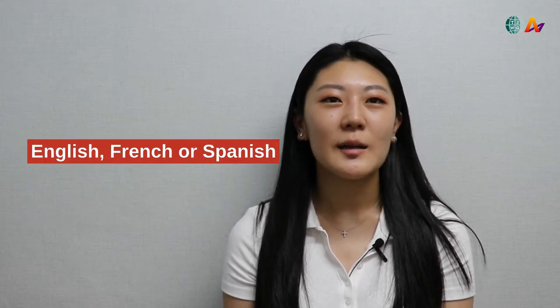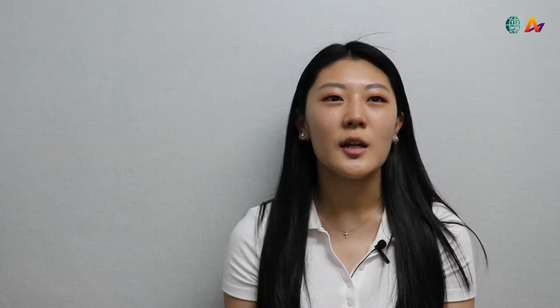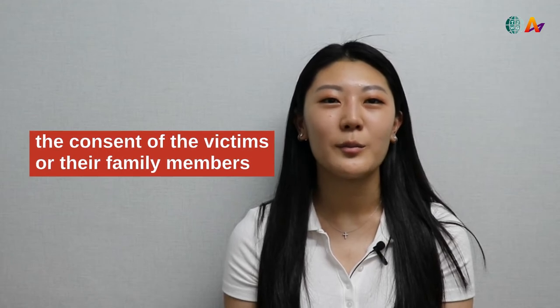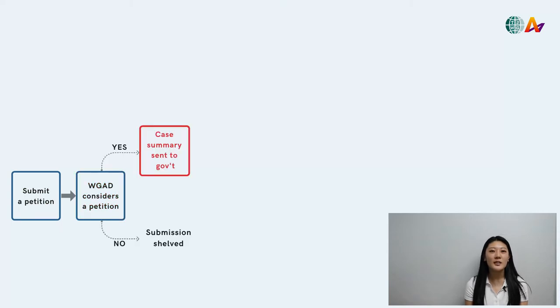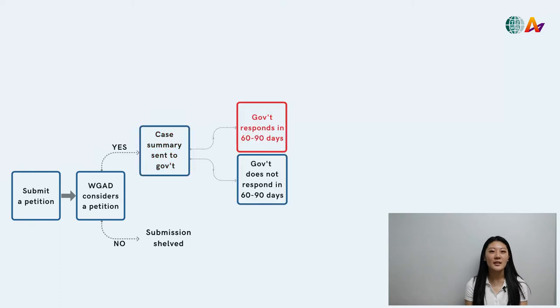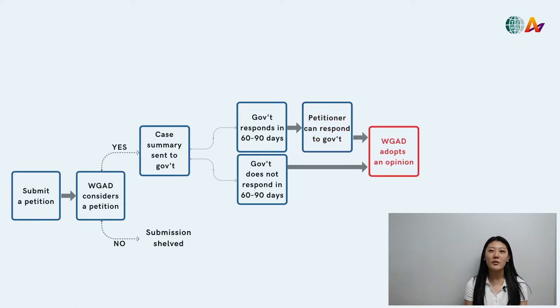Submissions to the WGAD must be in English, French, or Spanish, and must be accompanied by the consent of the victims or their family members. Once a petition has been submitted, the working group will decide if the case has merits. If a case is taken up for deliberation, the working group will send a letter with the summary of the case to the respective government and give it 60 to 90 days to respond in writing. If the government sends a response in time, the petitioner is given one more chance to respond in writing. Then the five members of the working group, who meet three times a year, will deliberate and adopt an opinion based on the submissions from the petitioner and the government. After some final editing, the opinion is published on the WGAD's website. This means the whole process will take at least half a year and possibly even a year or two.